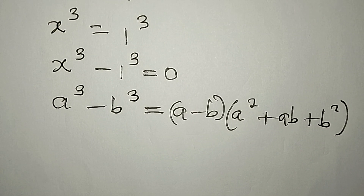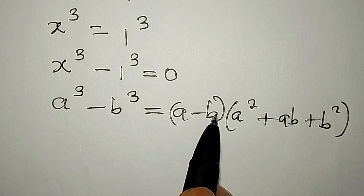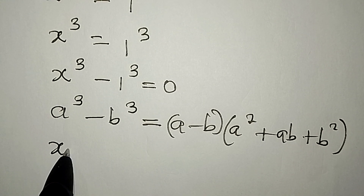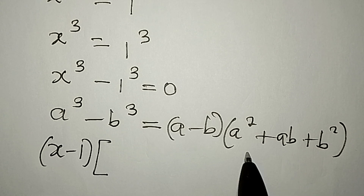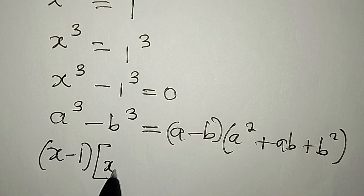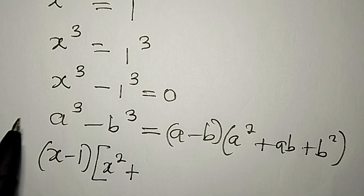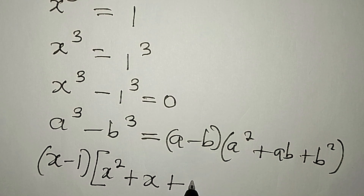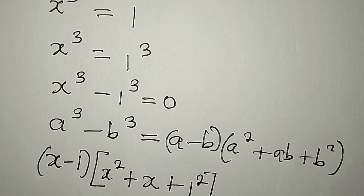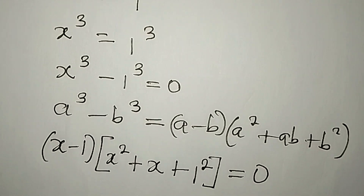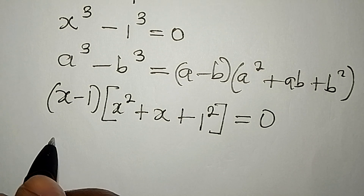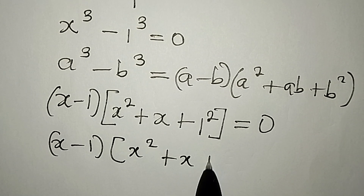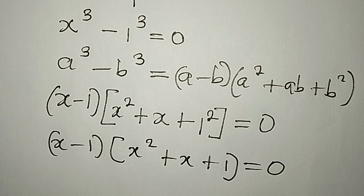Applying this identity, in place of (a - b) we have (x - 1), then multiplied by (x² + x·1 + 1²), which gives us (x - 1)(x² + x + 1) = 0.